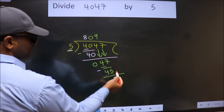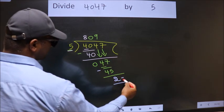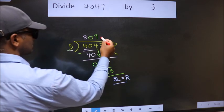No more numbers to bring it down, so we stop here. This is our remainder. This is our quotient.